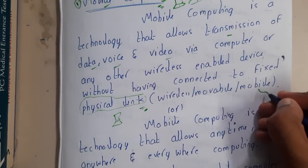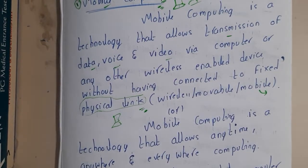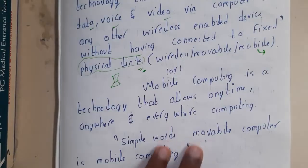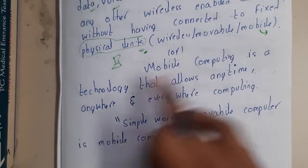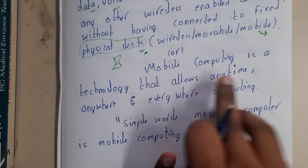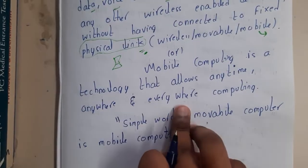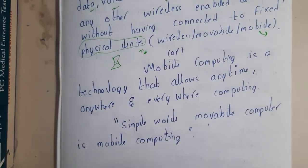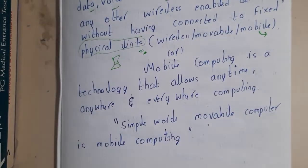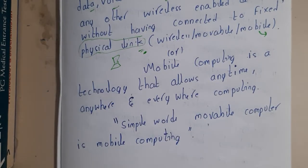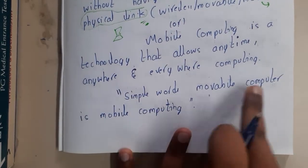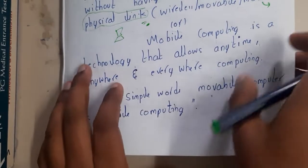Remember, 'mobile' here is not our smartphone — though the smartphone is an example of mobile computing. Another definition: mobile computing is a technology that allows anytime, anywhere, everywhere computing. You can carry your mobile and talk to your friend from anywhere, provided there are proper signals.